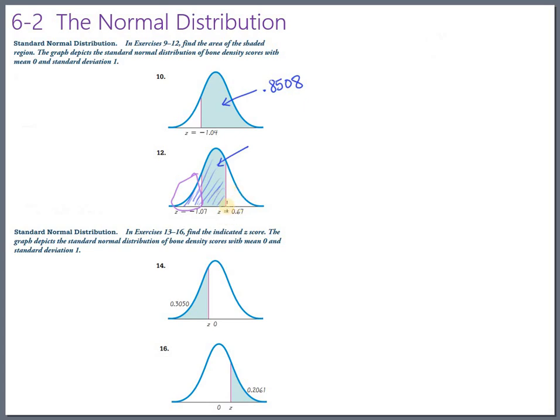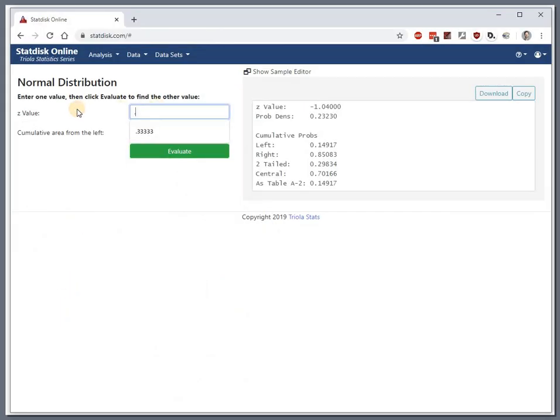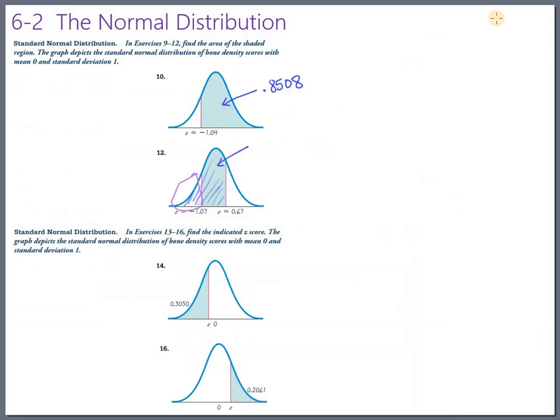So let's start, first of all, with just the total area to the left of 0.67. So 0.6, oops, 6, 8, 6, 7. The area to the left of that is 0.7486. So 0.7486.